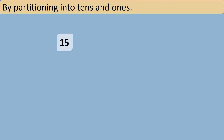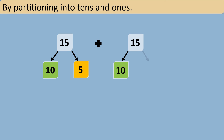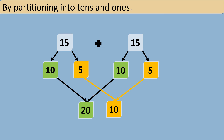Let's find the double of 15 by partitioning into tens and ones. We will add the same number twice and see how many tens these numbers have. Both have the same number of tens and same number of ones. By adding the ones we get 10, and by adding the tens we get 20, and 20 plus 10 equals 30, which means the double of 15 is 30.